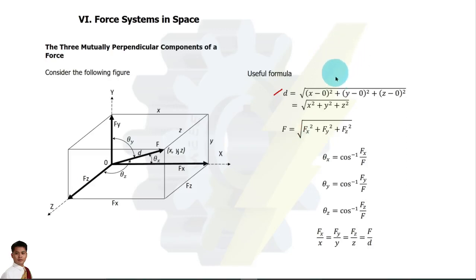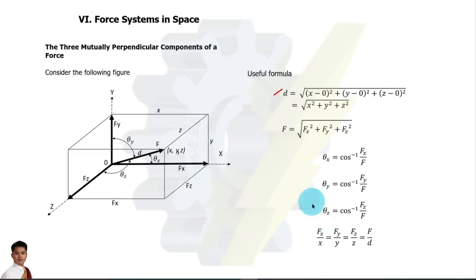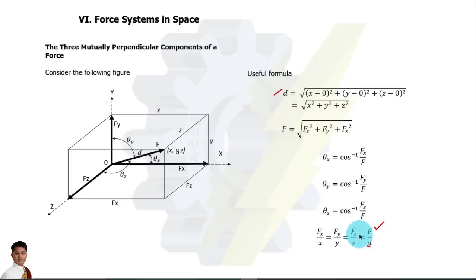For this chapter we are also going to consider the dimensions of the rectangular parallelepiped, so we can relate those dimensions to the forces. We can simply use ratio and proportion or the cosine function. Here x, y, z are also the dimensions of the rectangular parallelepiped with d as the diagonal. If the given is force F, we can solve the component along z by using this relation, and similarly for Fx and Fy using the x and y dimensions.